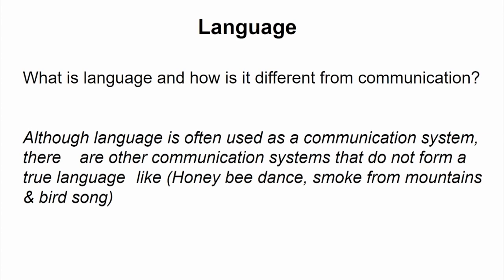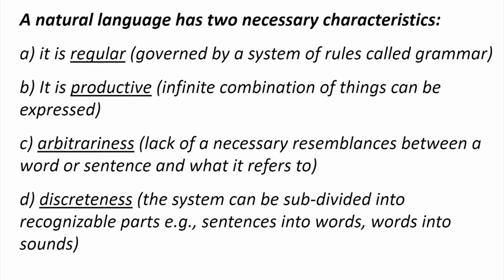Some communication systems include honey bee dances, smoke signals, and bird songs. What is the difference between a communication system and a language? A natural language has four properties. First, a natural language is regular — it is governed by certain rules called grammar, which tells the language what should be interpreted and what should not. Also, a natural language is productive, meaning it can produce an infinite number of combinations and ideas.